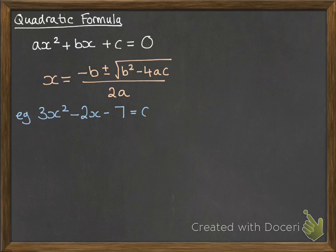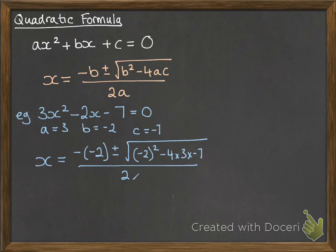So let's apply this to this equation here. So a would be 3, b would be minus 2, and c would be minus 7. Pop it into the formula, and then solve it.